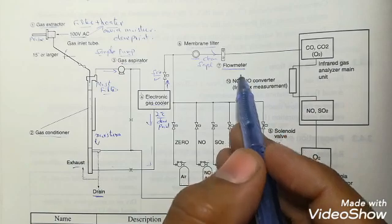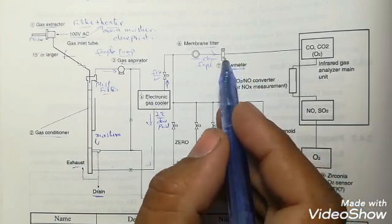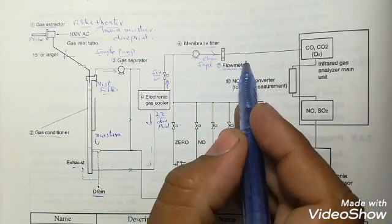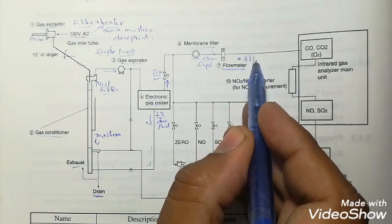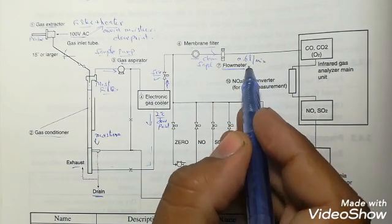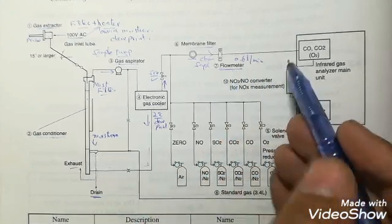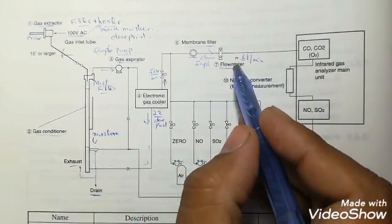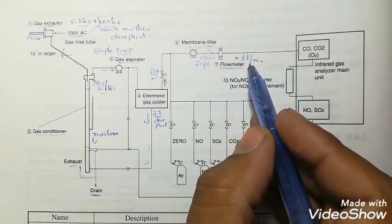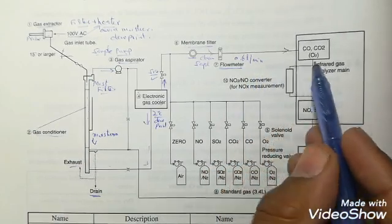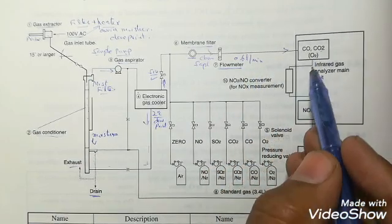This SOV is open when we are sampling. Then this sample goes to the membrane filter. It also cleans any remaining dust inside it, and then this is given to the module through this flow meter. Here we can adjust our flow to 0.6 liters per minute, which is the standard flow for this gas analyzer.